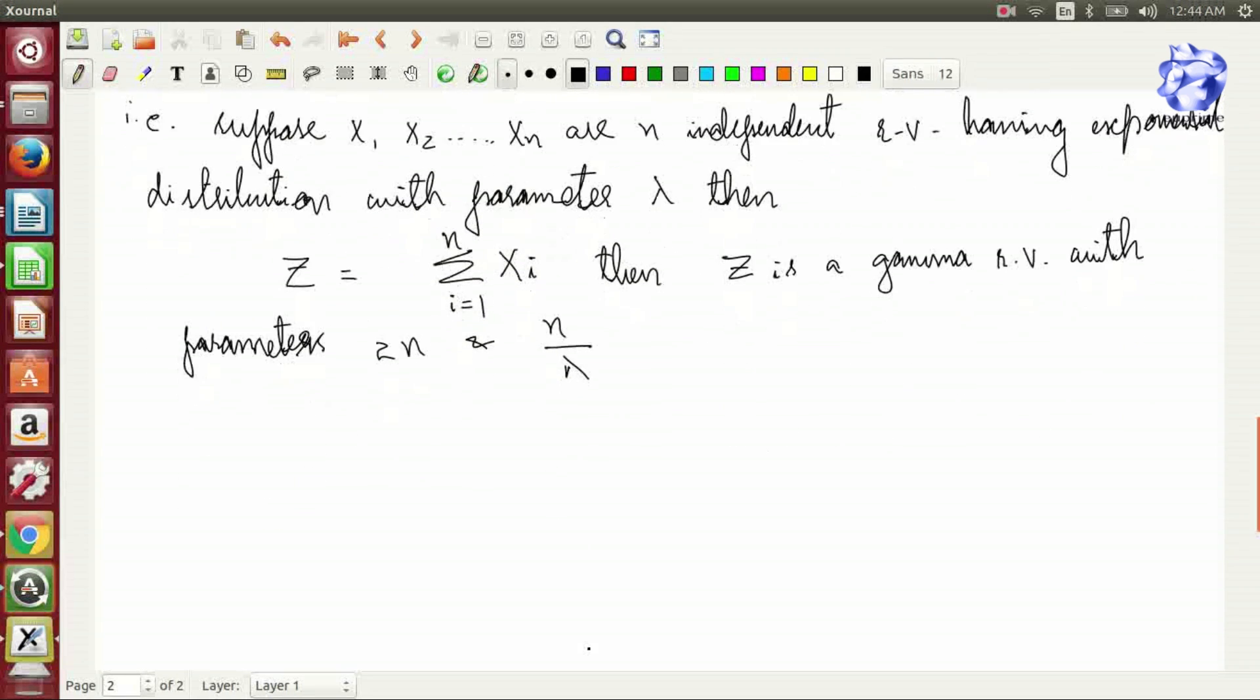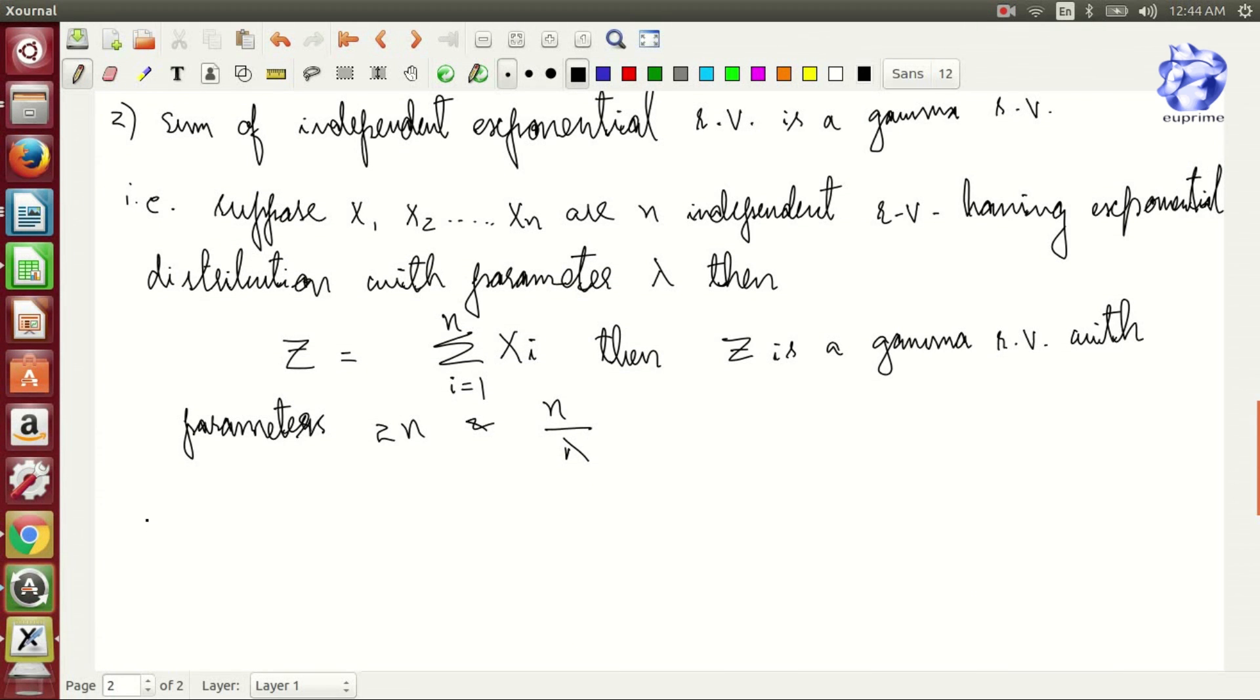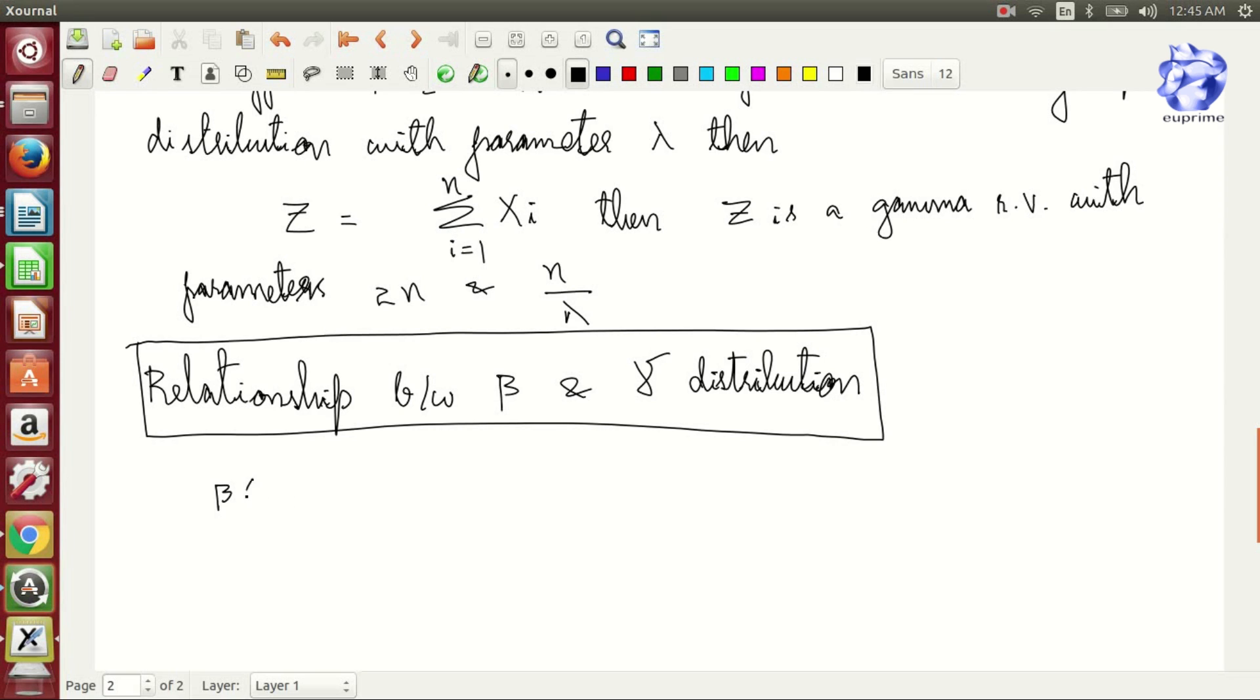Now we'll discuss the relationship between beta and gamma distributions. Meanwhile, I'll tell you the applications of gamma distribution: they are used to model the size of insurance claims and rainfall. They have also been used to model errors in multi-level Poisson regression models used in neuroscience, bacterial gene expressions in genomics, and are also widely used as a conjugate prior in Bayesian statistics.